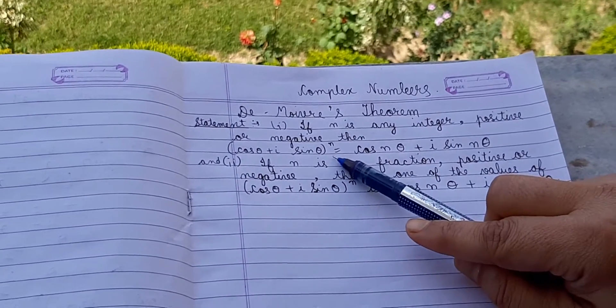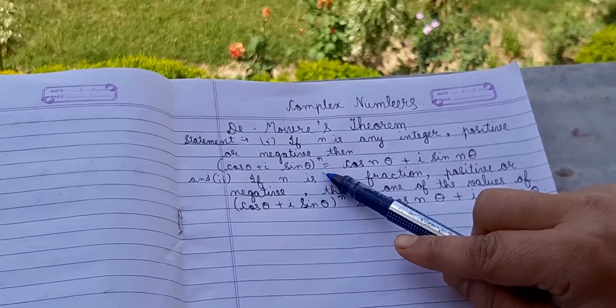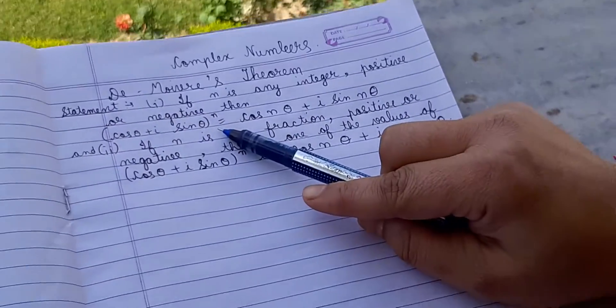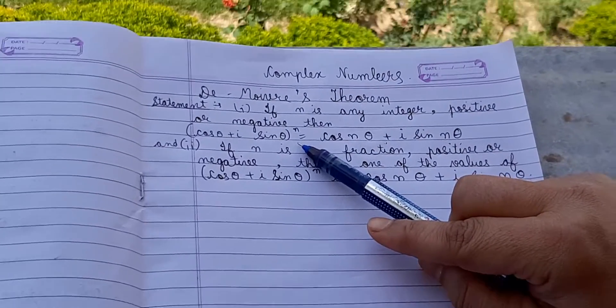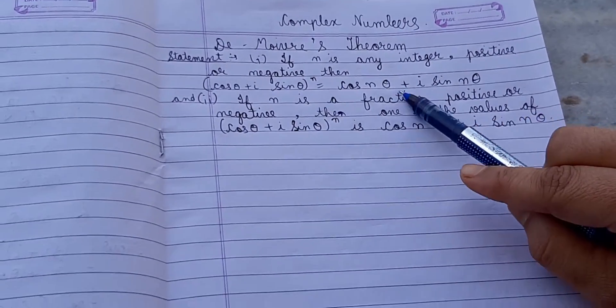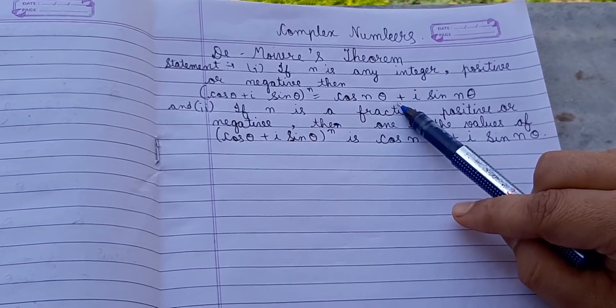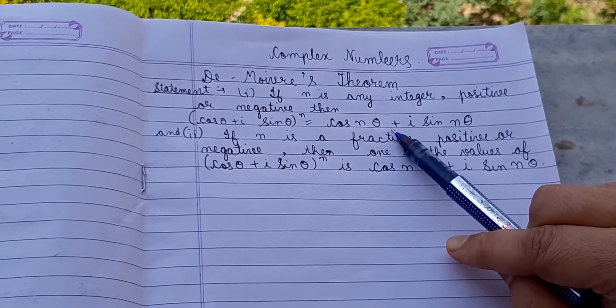Whatever is in the power, it will come forward, or you can say it will be multiplied with angle θ. That is, it will become cos nθ + iota sin nθ. Its converse is also true.